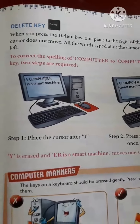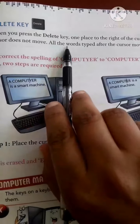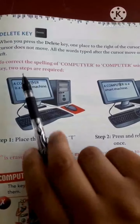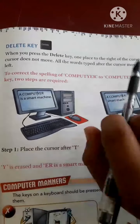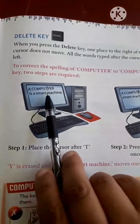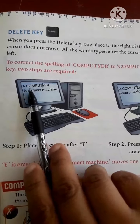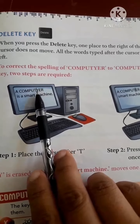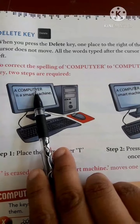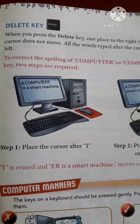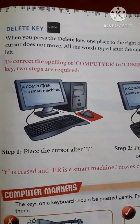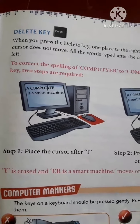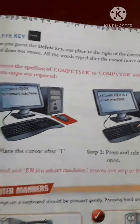Now next is delete key. When you press the delete key, one place to the right of the cursor is erased. Is mein aapko right hand side agar move karna hai — agar yahan par spelling likhi hui hai computer ki: C-O-M-P-U-T-Y-E-R. Toh mujhe is Y ko erase karna hai. Toh mein backspace key agar press karungi toh T erase ho jayega. Y — okay, this is the correct spelling.